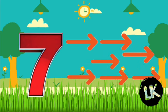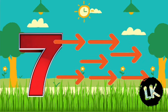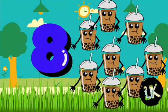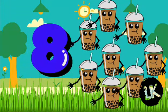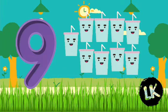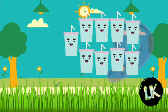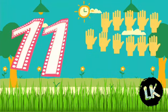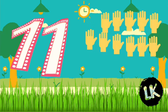7 — 7 arrows. 8 — 8 glasses. 9 — 9 glasses. 10 — 10 thumbs. 11 — 11 hams.